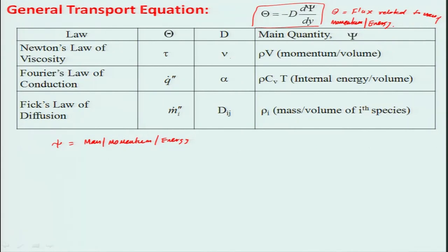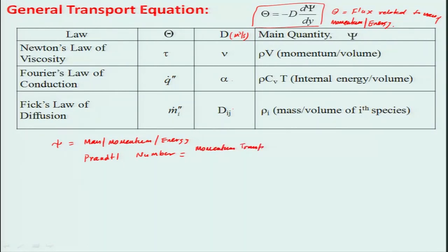However, the units of all these diffusivities are meter squared per second — momentum diffusivity, thermal diffusivity, and molecular diffusivity. We will later use some non-dimensional number parameters to make handling easier. One we will be using is the Prandtl number, which is momentum diffusivity divided by thermal diffusivity, that is nu divided by alpha.